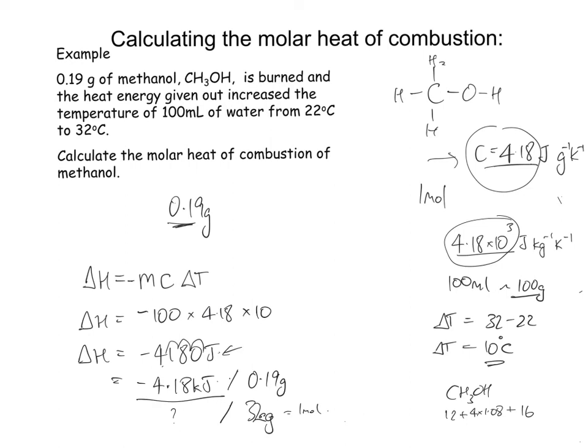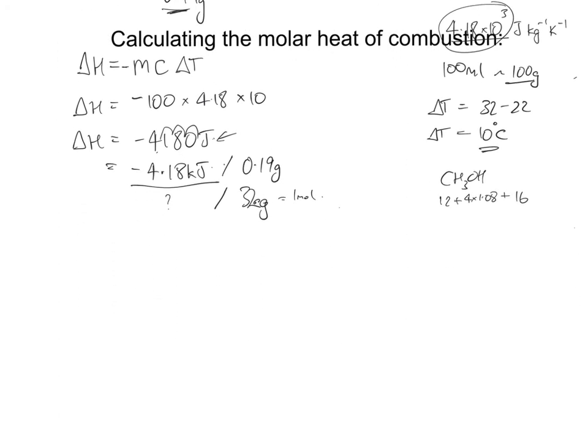We can use a simple ratio here. 4.18 is to x equals 0.19 is to 32. You can cross multiply here and you get 0.19x equals 4.18 times 32, so x equals 4.18 times 32 divided by 0.19.